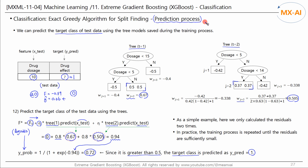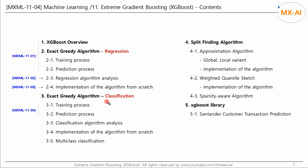In this example, we only performed two iterations to simplify the problem, but in practice we iterate until the residuals are sufficiently small and multiple trees are generated. So far, we've looked at the training and prediction process of XGBoost classification. In the next video, we will analyze the classification algorithm in detail through the contents of the paper.